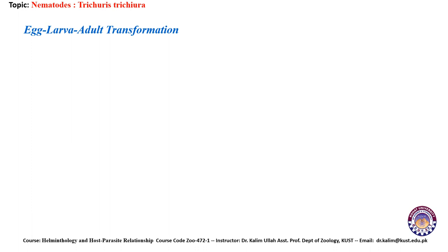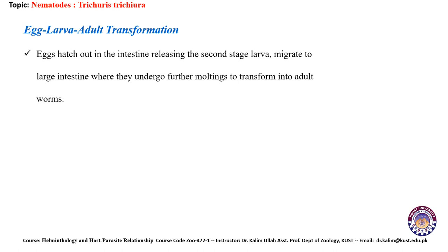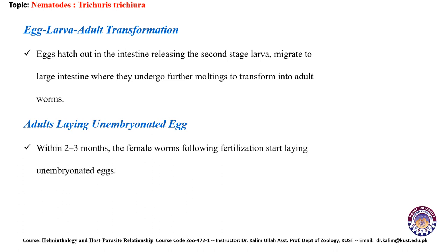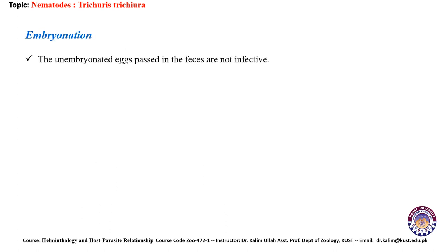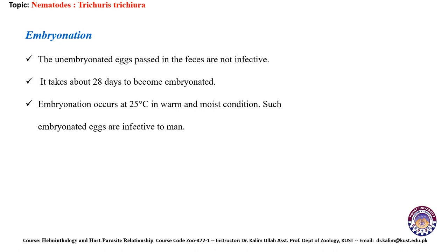Regarding the transmission route — egg to larvae to adult: eggs hatch in the intestine, releasing second-stage larvae that migrate to the large intestine, where they undergo further molting to transform into adult worms. Adult worms lay unembryonated eggs within two to three months; each female worm can lay up to 14,000–20,000 eggs per day for a period of one to three years. The unembryonated eggs passed in feces are not infective. It takes up to 28 days for the eggs to become embryonated; embrionation occurs at around 25°C in warm and moist conditions, and such embryonated eggs are infective.